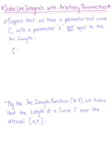In other words, our parametrization C is defined by the vector-valued function r(t), where r(t)'s components are x(t), y(t), such that a ≤ t ≤ b. So let's plug this into our definition.